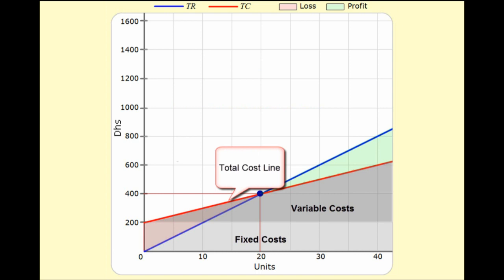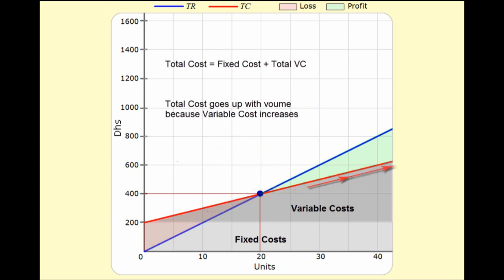Our total cost is, therefore, the sum of the fixed costs plus the total variable costs. We have a line that has a positive slope, and it starts out at what the fixed costs are, and goes up from there.